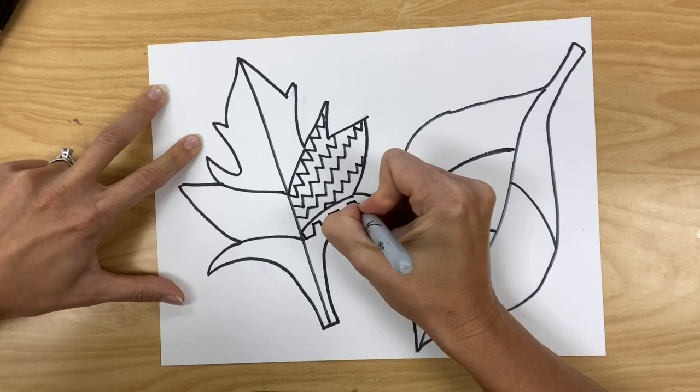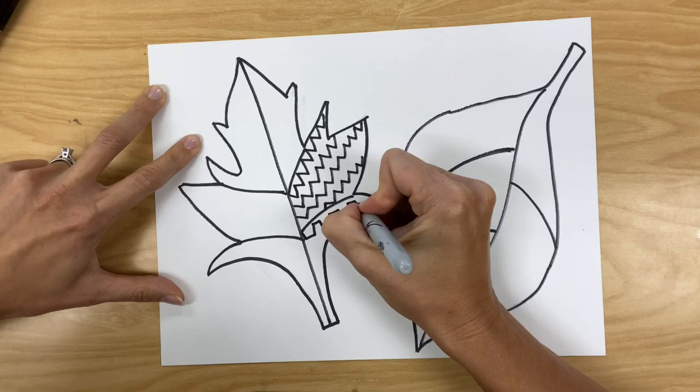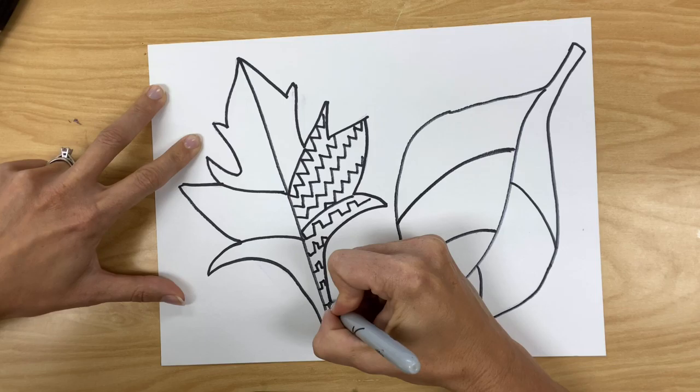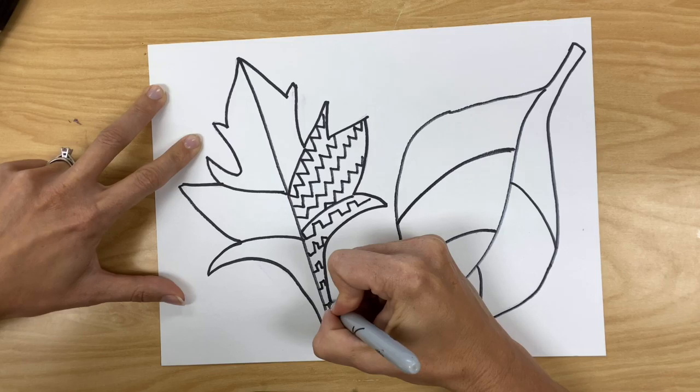You're going to do this with Sharpie marker. If you feel more comfortable drawing your lines first with pencil and then overlapping with Sharpie, that's fine. I'm just going straight in with Sharpie. It just depends on how confident you feel and how much practice you've had. So each section of your leaf, you're practicing a different type of line.